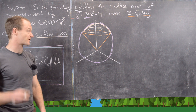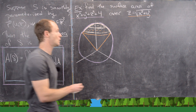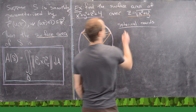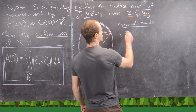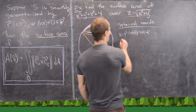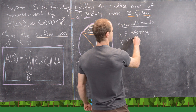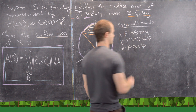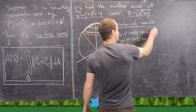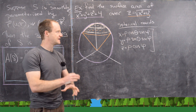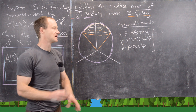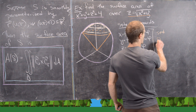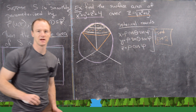Let's see if we can parametrize this surface, which is our first goal. We'll do this by taking inspiration from spherical coordinates. Let's recall: spherical coordinates look like x = ρ cosθ sinφ, y = ρ sinθ sinφ, and z = ρ cosφ.